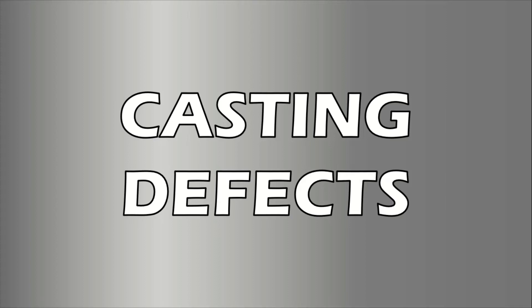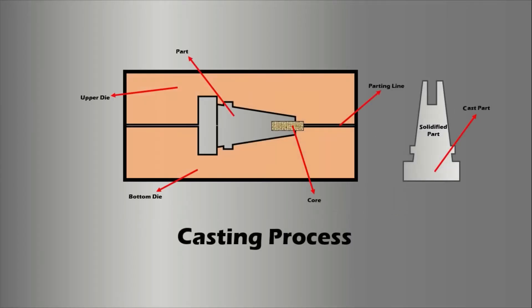In this video we will discuss casting defects. First, let's see what casting is. Casting is a manufacturing process in which a liquid material is poured into a mold which contains a hollow cavity of the desired shape, and then allowed to solidify. The solidified part is known as a casting.